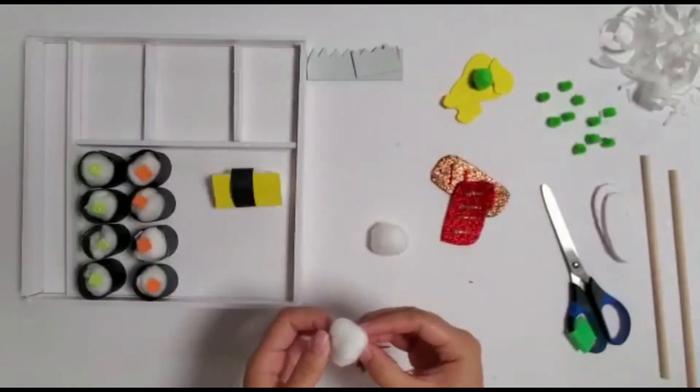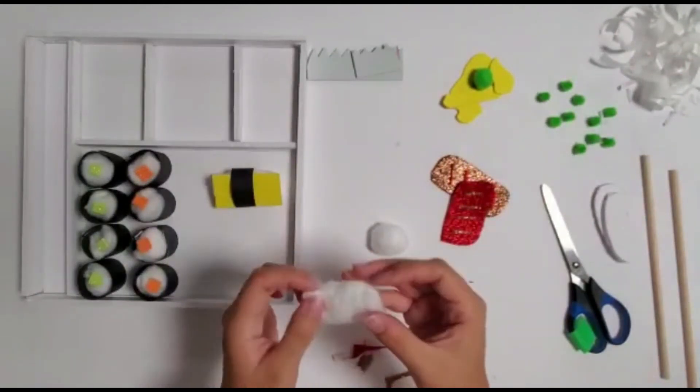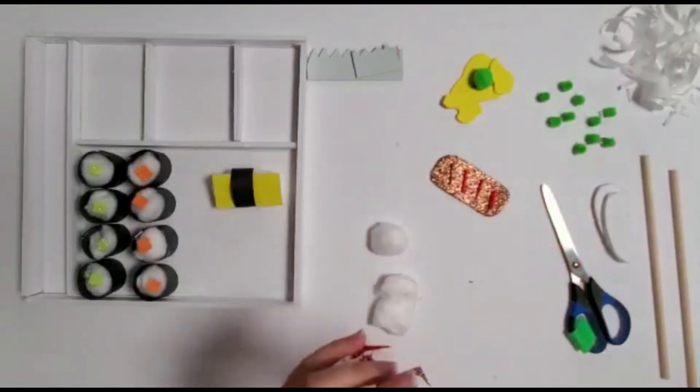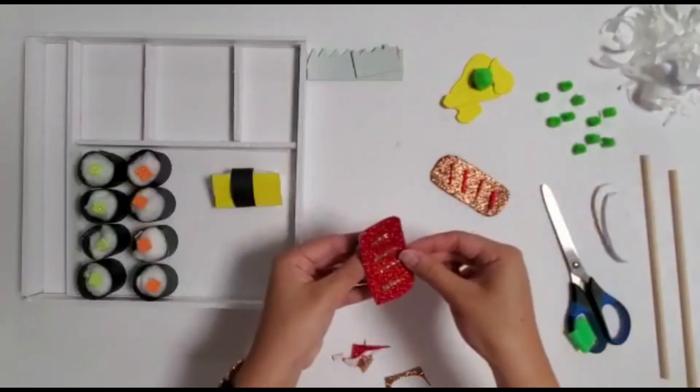Flatten the two other cotton balls like you did with the egg sushi. Then peel off the backing from the stickers and stick them onto a cotton ball.